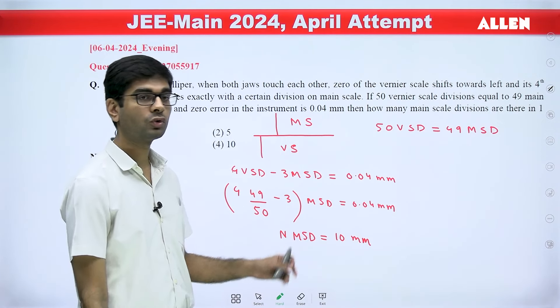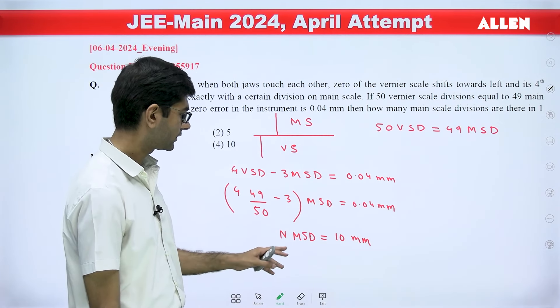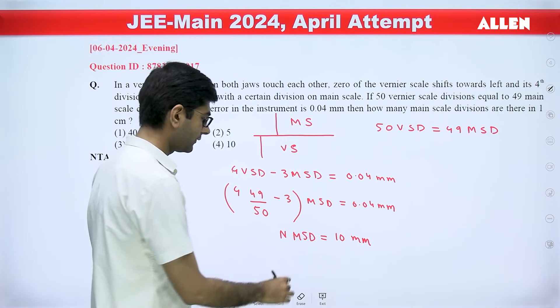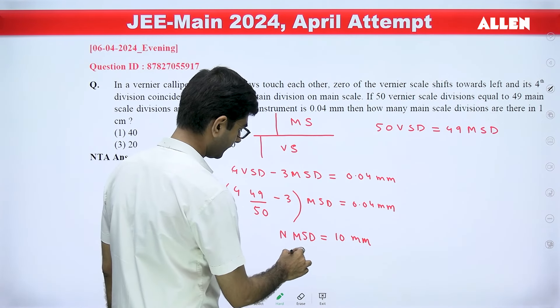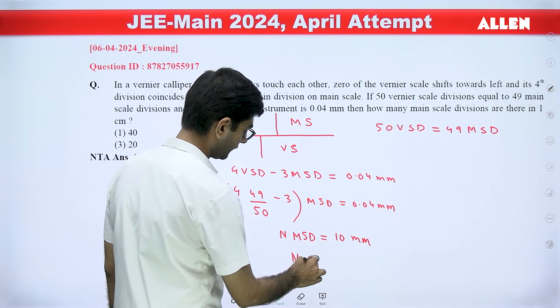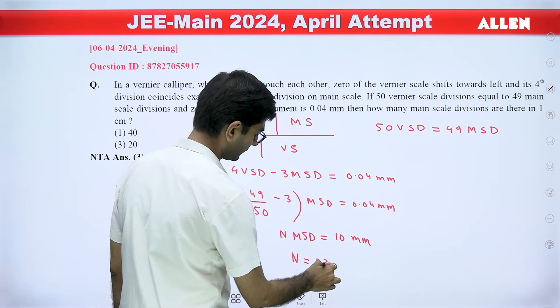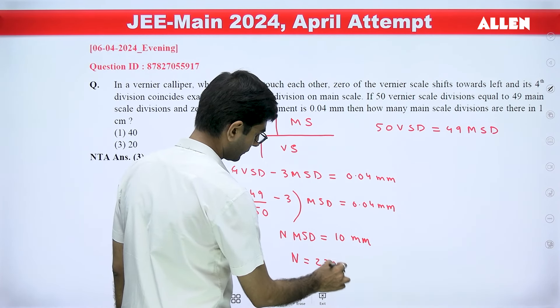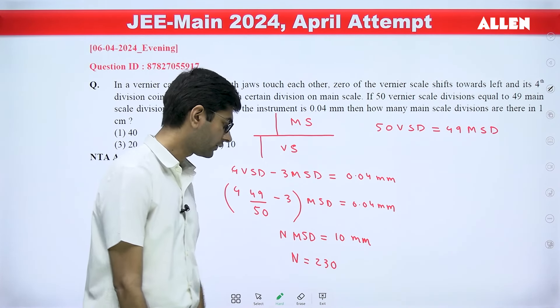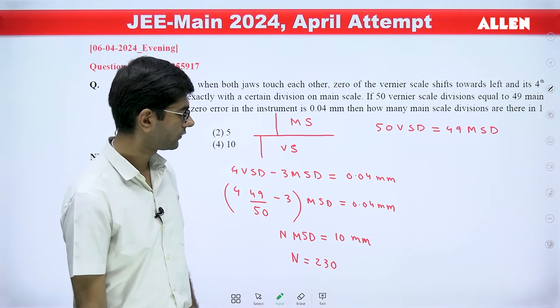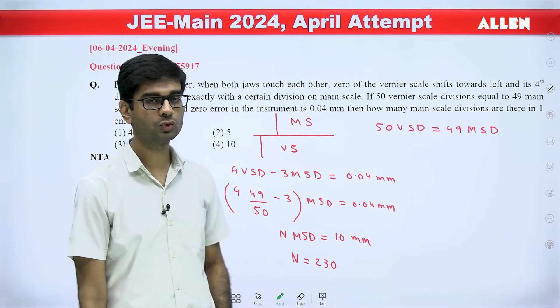The value of MSD is known to us, so using the second expression we can find the value of n. The value of n comes out to be 230. So the answer to this question is 230, considering that the zero of the vernier scale shifts towards the left.